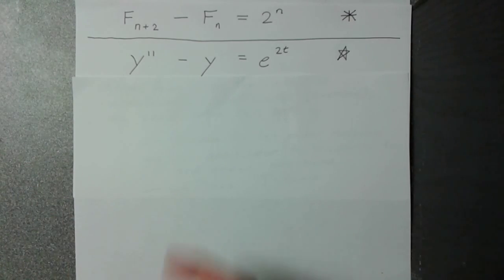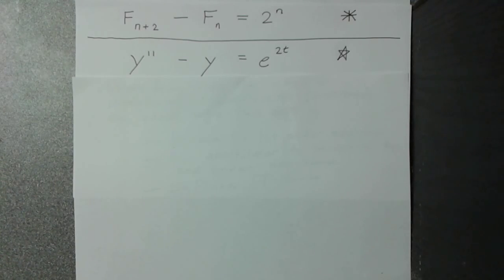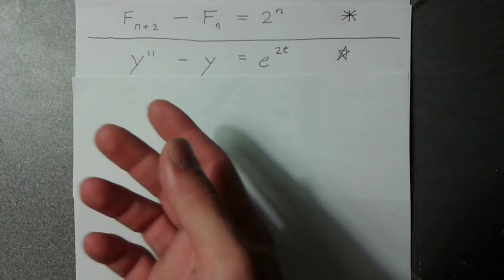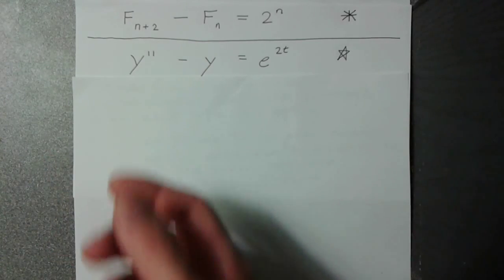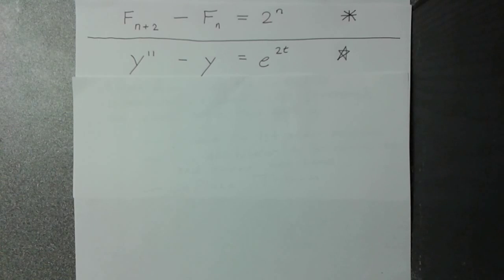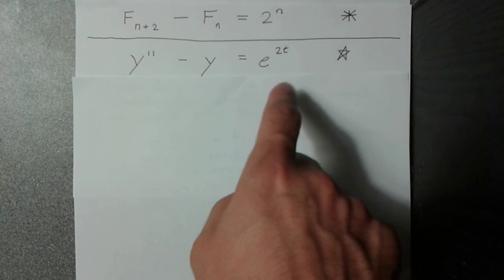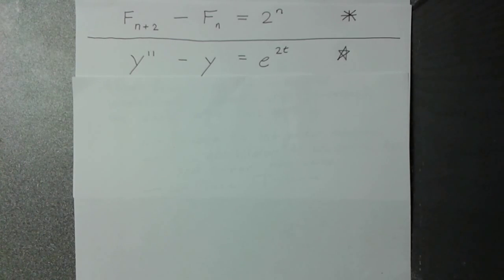So this differential equation — if you were going to solve this, the first thing that comes to mind would probably be the method of undetermined coefficients. You'd also use the superposition property. You know what the homogeneous solution is, and then you just make a guess for the particular solution. The guess would just be a constant multiplied by the exponential function. Then you figure out what that constant is and add the homogeneous solution to the particular solution.